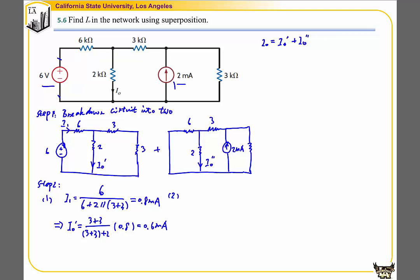In the second part, we're going to solve for I0'' from the second circuit. We know the overall current from the power supply is 2 mA. Then we can find the current in this branch, I2, flowing to the left.